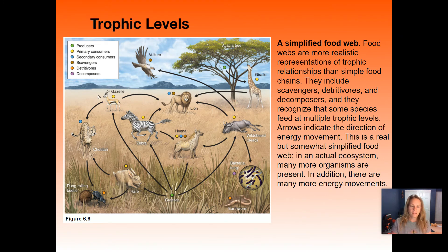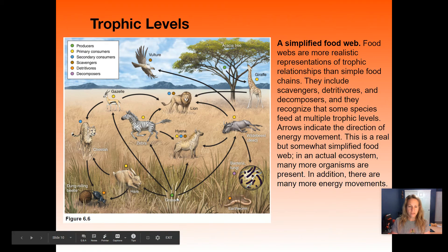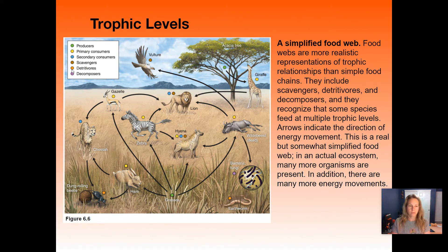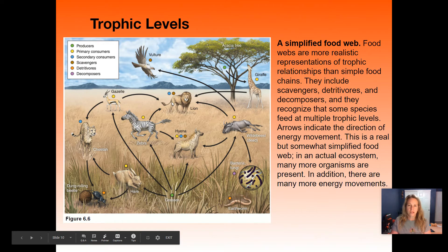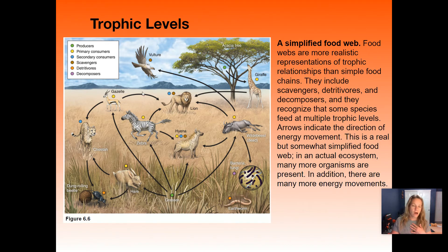Here's our food web diagram set in the savannah biome. You can see the producers are the grasses, and the diagram shows all the different scenarios — that's why it's a food web, showing how everything is webbed and intertwined rather than just one scenario. Some organisms can fill multiple roles: a lion can be a scavenger or a secondary consumer, just like humans can be a variety of things. We're never decomposers, detritivores, or producers, but we could be scavengers, secondary consumers, or primary consumers.